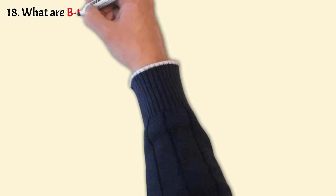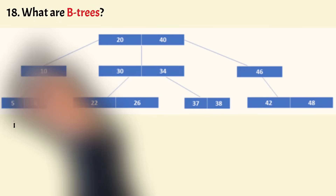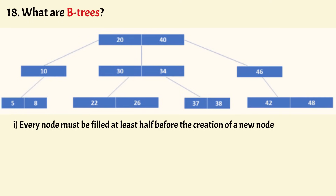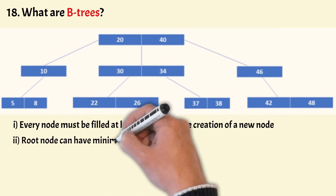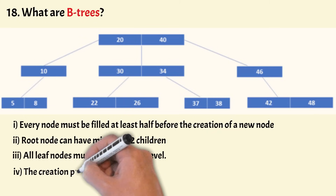What are B-trees? A B-tree is a self-balancing search tree in which each node can have more than one key and can have more than two children. Since multiple keys are stored in a single node, the height of the tree is less compared to other trees such as binary search trees, and this decreased height allows for faster disk access. Rules for creating B-trees: every node must be filled at least half before creating a new node; if the degree of a tree is m, there must be at least m/2 children; the root node can have a minimum of two children; all leaf nodes must be at the same level; and the creation process is bottom up.